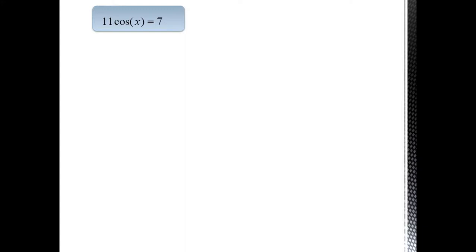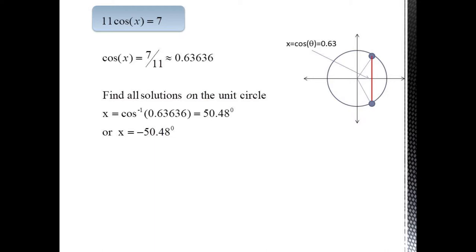Here's one that will require a calculator. We start with 11 cosine x equals 7, so of course cosine x equals 7 over 11 equals 0.63636. We can use the inverse cosine to solve this and we get x equals the cosine inverse of 0.63636, which is 50.48 degrees. But we need to remember that the inverse cosine only gives us the single solution in the interval 0 to 180.